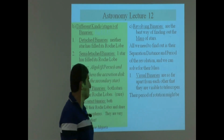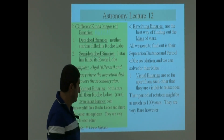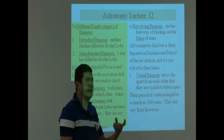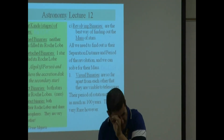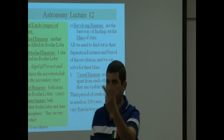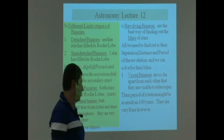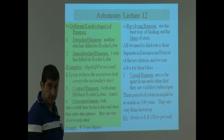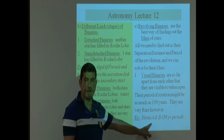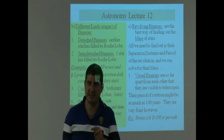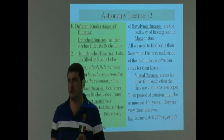Their period of rotation might be as much as 100 years because they're so far apart. They are very rare — maybe a handful of these exist where you can get a telescope, point it, and actually see that there are two stars and observe their period of rotation. An example is Sirius A and B, which we've talked about before. Sirius A is the brightest star in the sky. Sirius B you cannot see with your naked eye; you need a telescope.